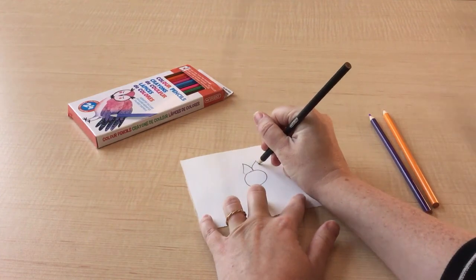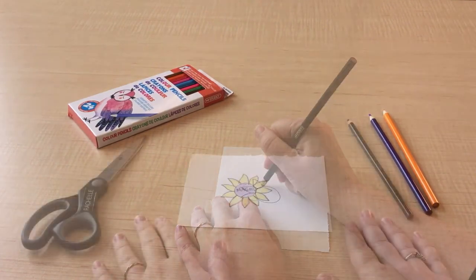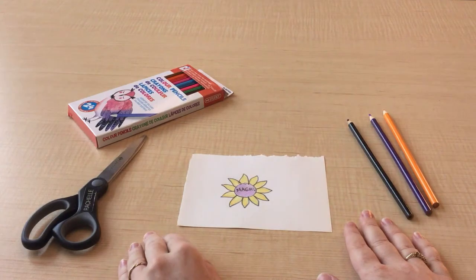You can draw a face or a secret message in the center of the flower. Next, we're going to cut out the flower.